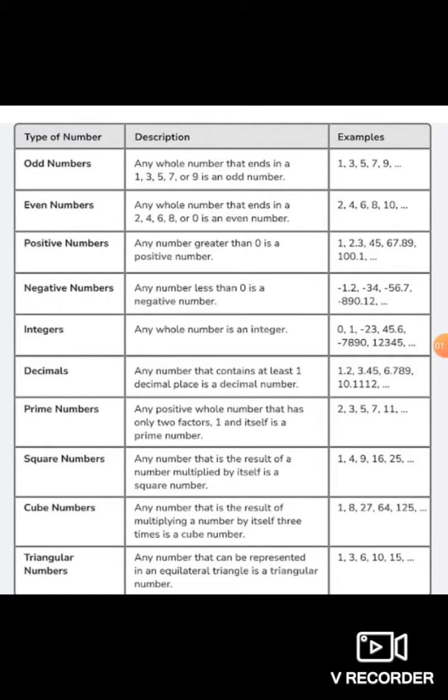Decimals. Any number which contains at least 1 decimal place is a decimal number. Like 1.2, 3.45, 6.789, 10.112.